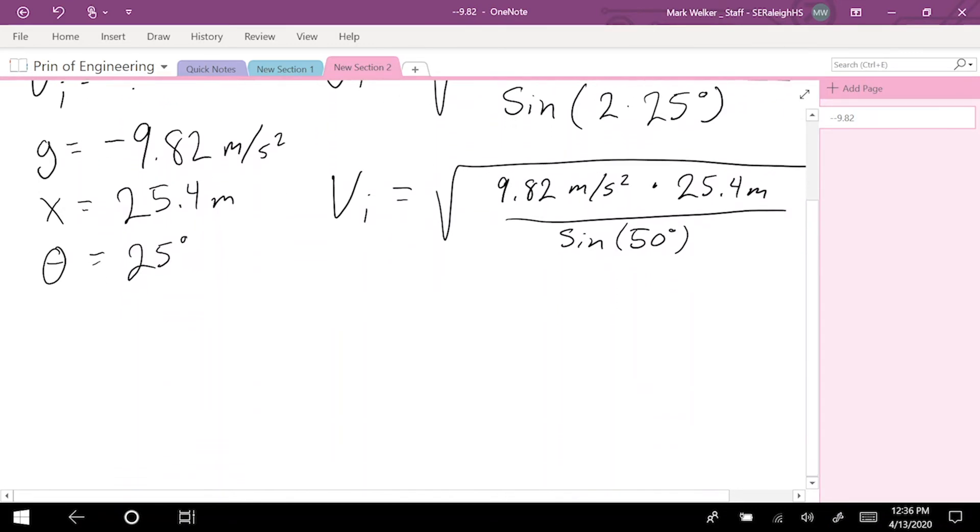Which means we go ahead and look at the units involved. We should be getting 9.82 times 25.4. When we combine those units, meters times meters per second squared, means that we have meters squared over seconds squared, over a unitless value of sine of 50 degrees.